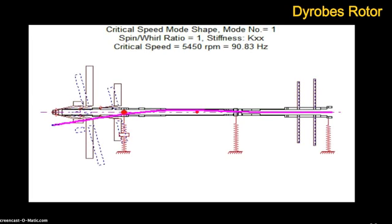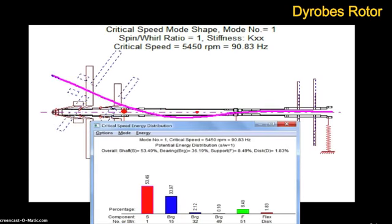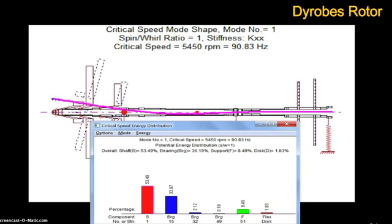You can also animate your results, which can give you additional insight into the dynamics of your system. And here is the energy distribution in the system. Here you can see that almost all the energy resides in the shaft and just one of the three bearings.